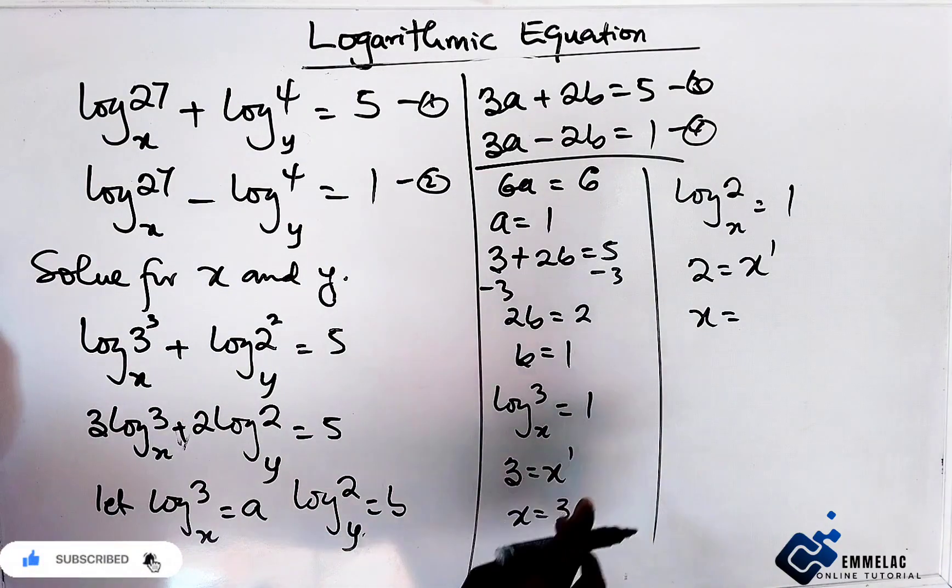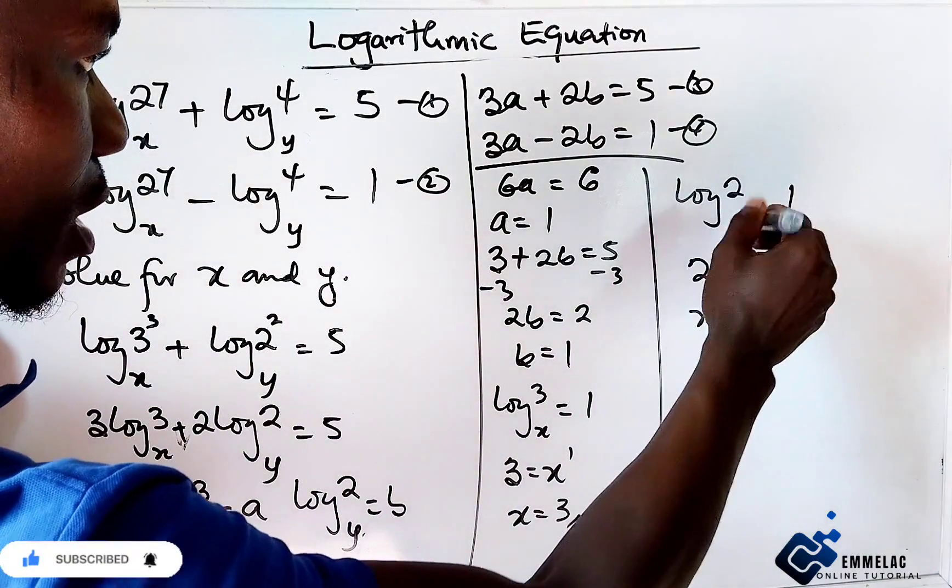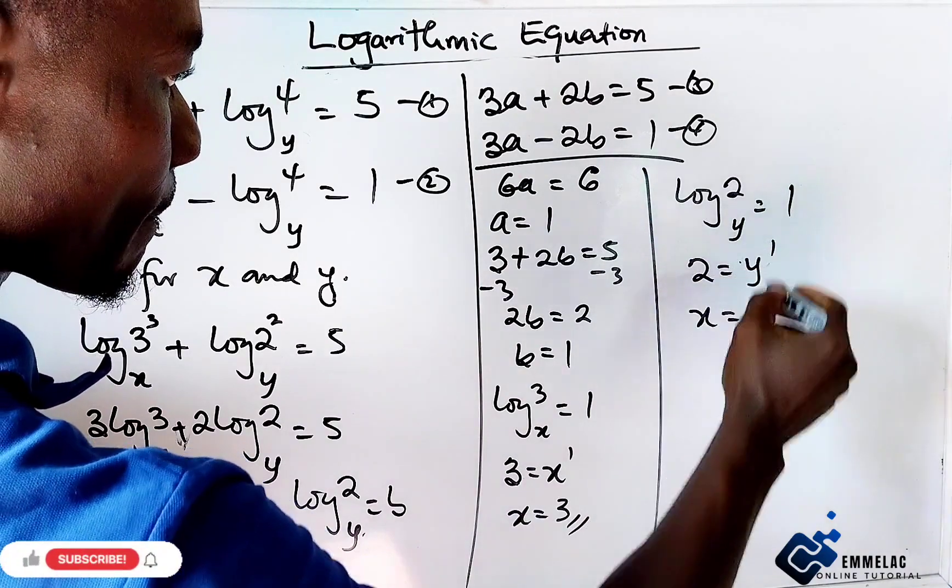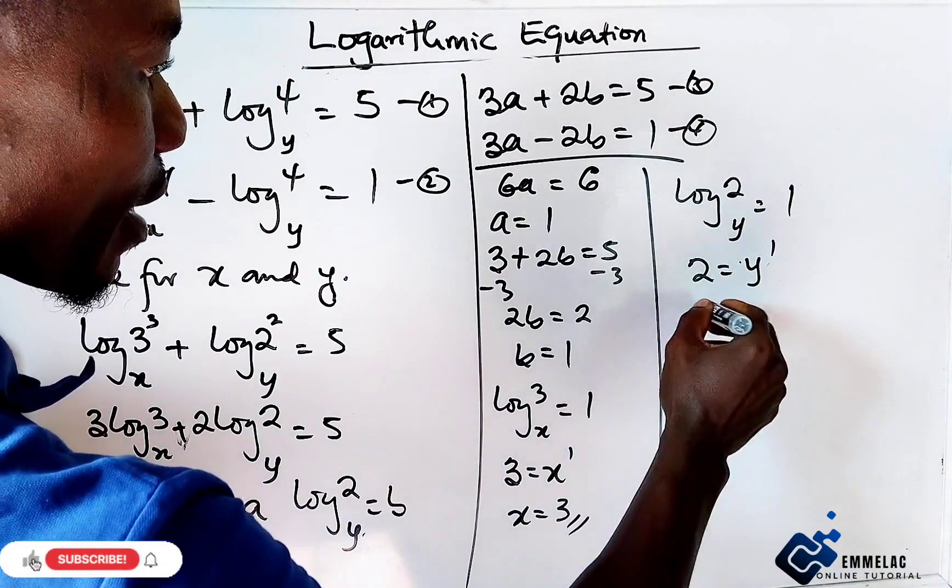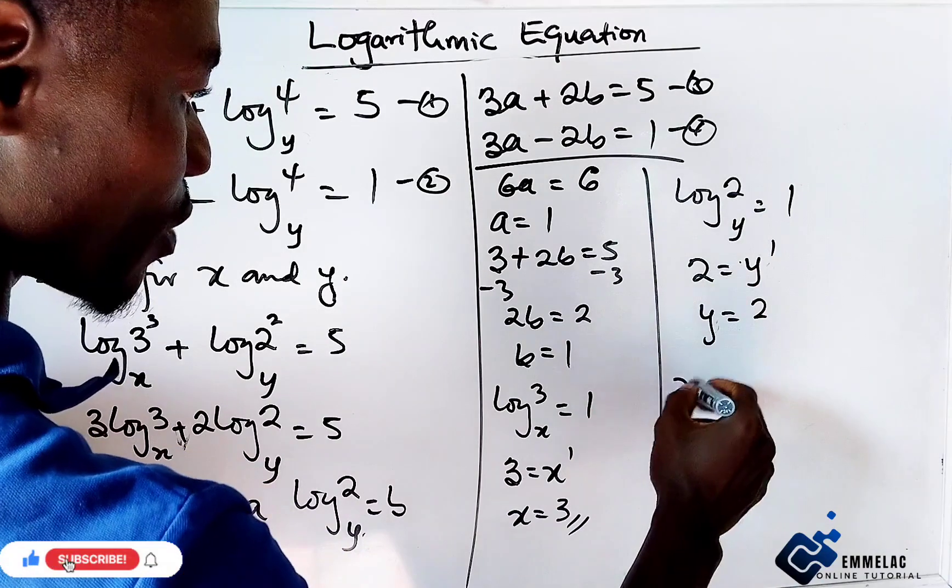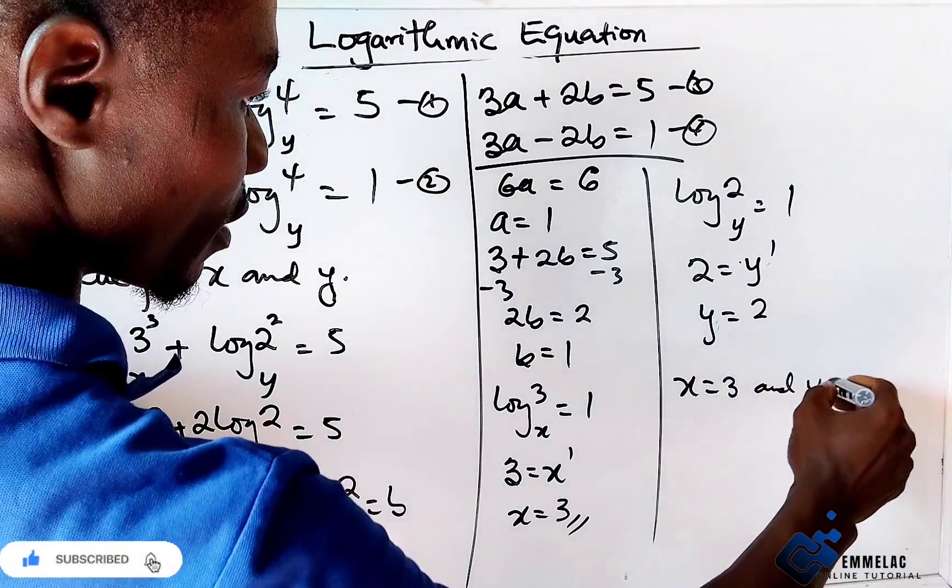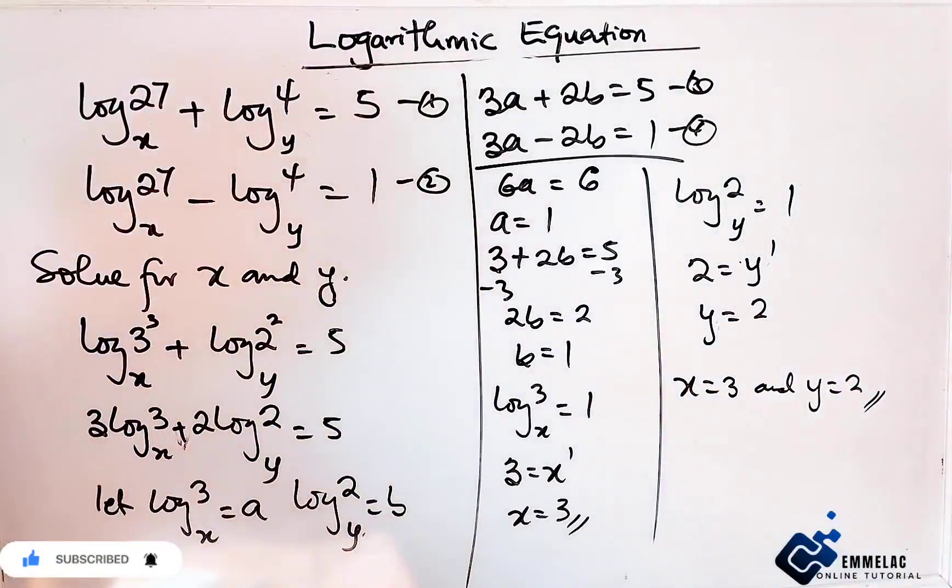So for b, we have y. Therefore y equals 2 raised to the power 1, which gives us y equals 2. Final answer: x equals 3 and y equals 2.